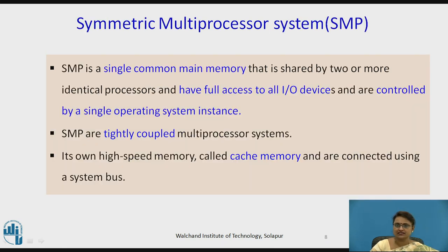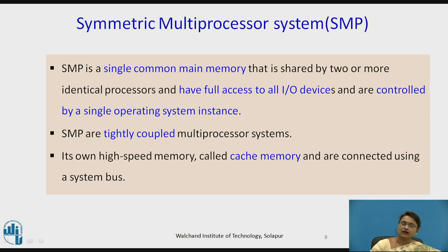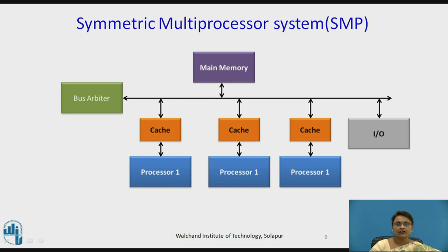Next comes the symmetric multiprocessor system, called SMP. In SMP, identical processors share full access to input/output devices and are all controlled by a single operating system instance. This is a tightly coupled multiprocessor system. By default it has high-speed memory and supports a cache memory connected to the system bus for faster access. The main memory is shared by all processors, each having its own cache, with I/O shared and managed by a bus arbiter.